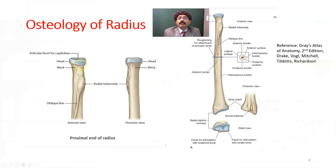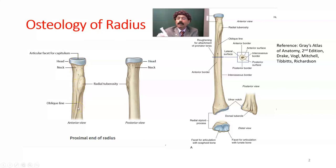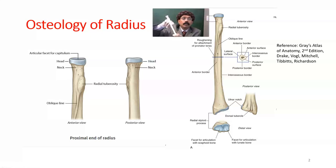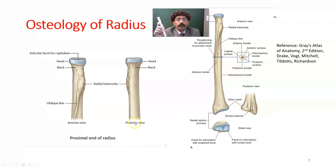At the upper end, the articular facet for the capitulum is covered by hyaline cartilage. This is the neck and radial tuberosity. There is an oblique line from the radial tuberosity going obliquely downward. This is the oblique line, and this is the posterior view of the proximal upper end of the radius.